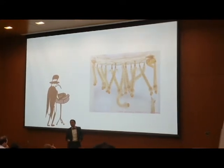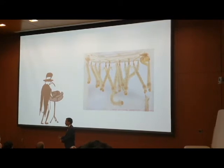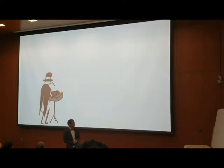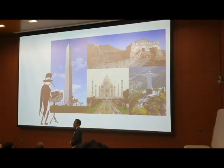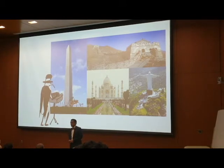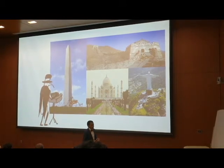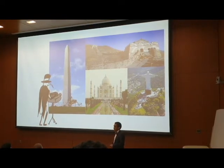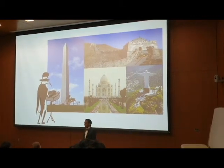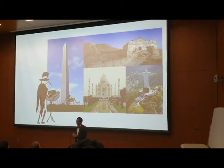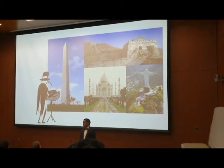Dengue larvae are raised in stagnant water, so a big problem is clearing up ponds and garbage dumps. The Aedes aegypti is found on every continent except Antarctica. It's an infectious tropical disease, but the biggest problem is in developing countries. Zika, which is also a flavivirus and uses the same vector, reminds us how easily these outbreaks can spread.